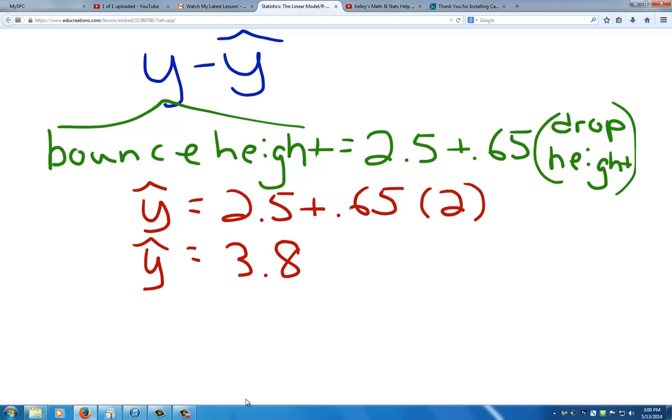Now let's pretend that our ball was dropped from a height of 2 feet. The predicted value for the bounce height of this ball would be 3.8 feet. But perhaps when we actually drop the ball from a height of 2 feet, it bounces 4 feet.